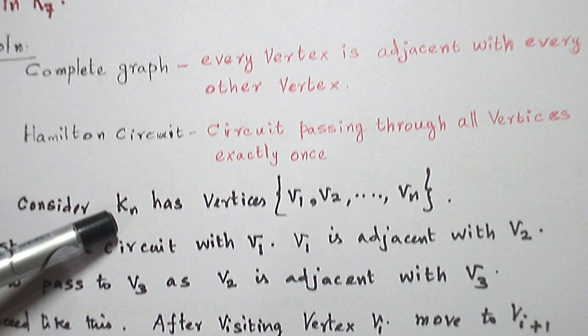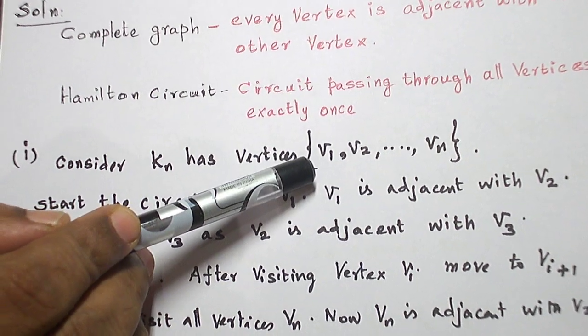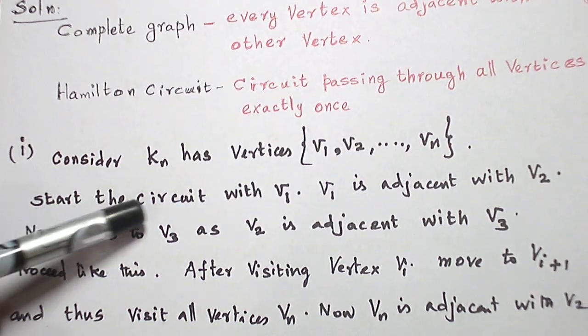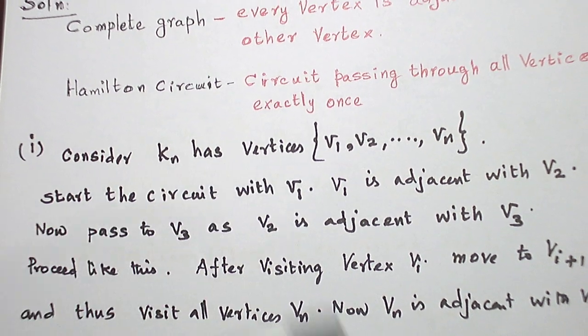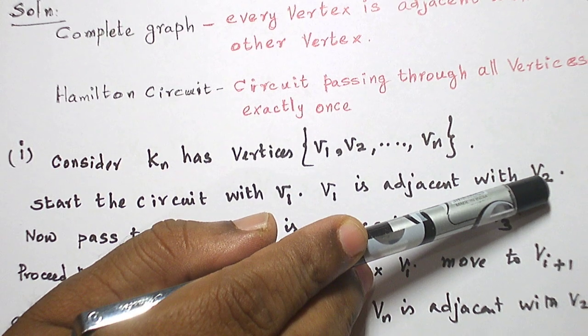Now let us consider complete graph on N vertices. Take the vertices as V1, V2, etc., Vn. Start with the vertex V1. So in a complete graph, V1 is adjacent with all other vertices, in particular V2. So there is an edge V1, V2.